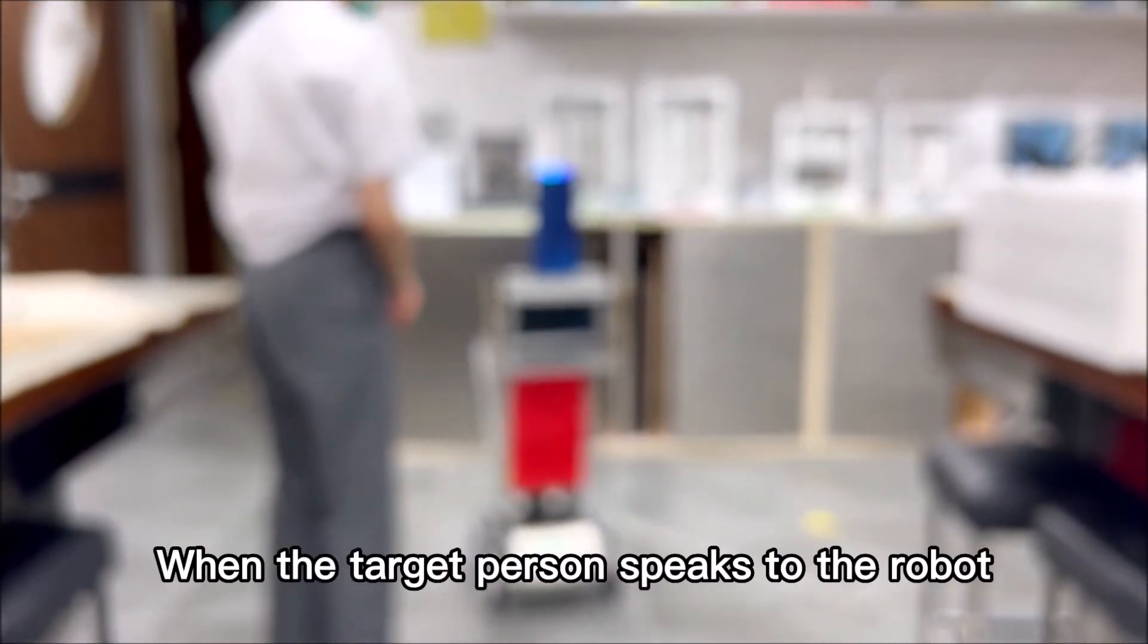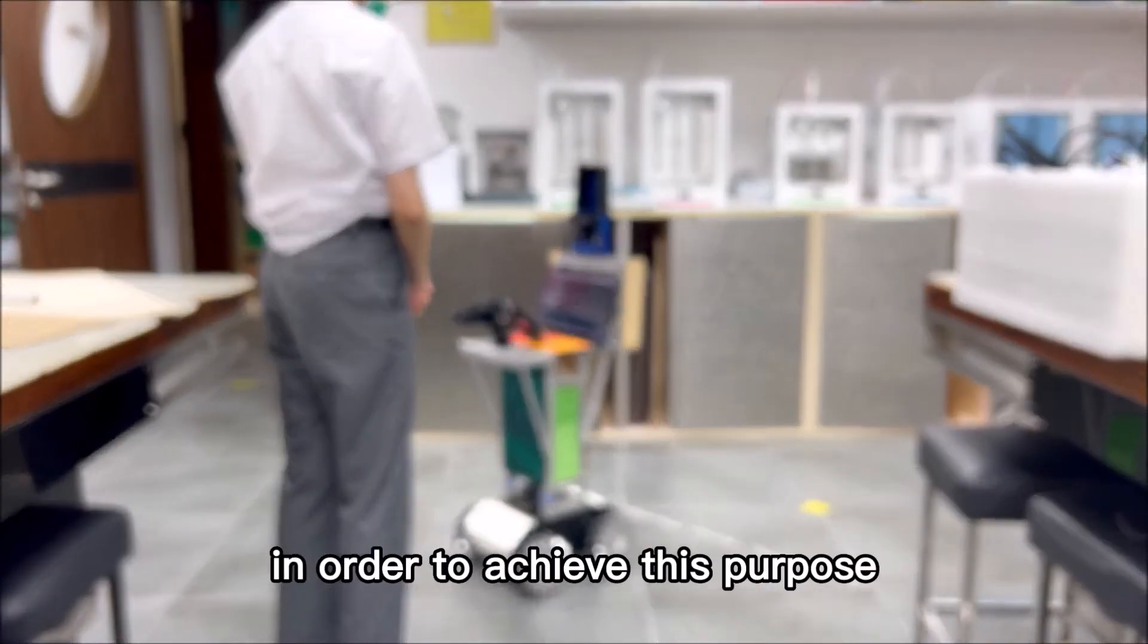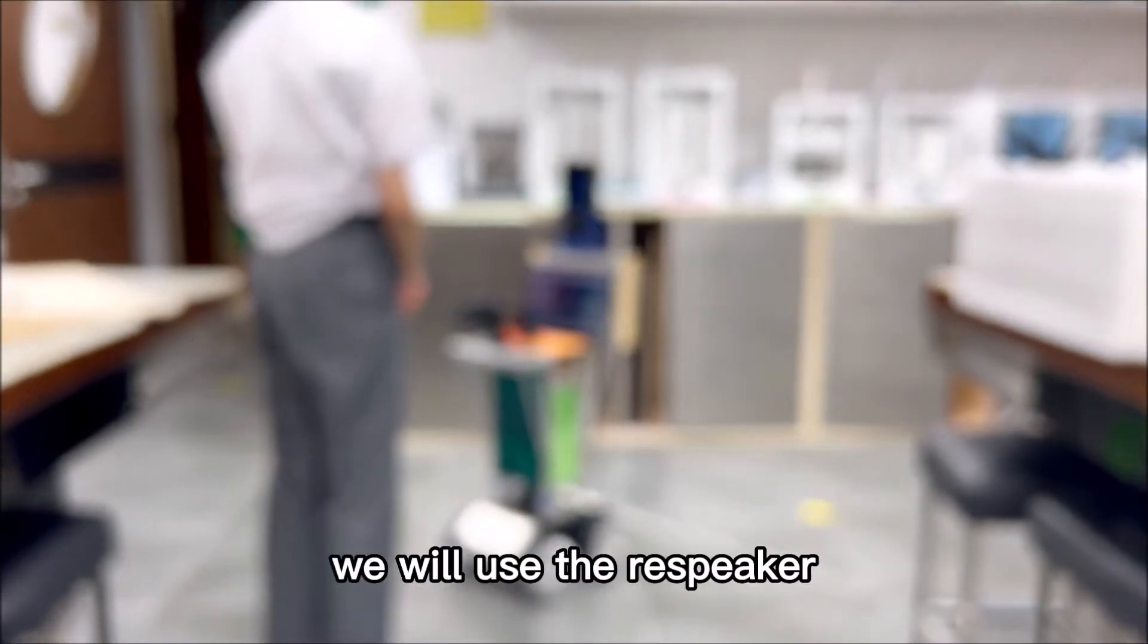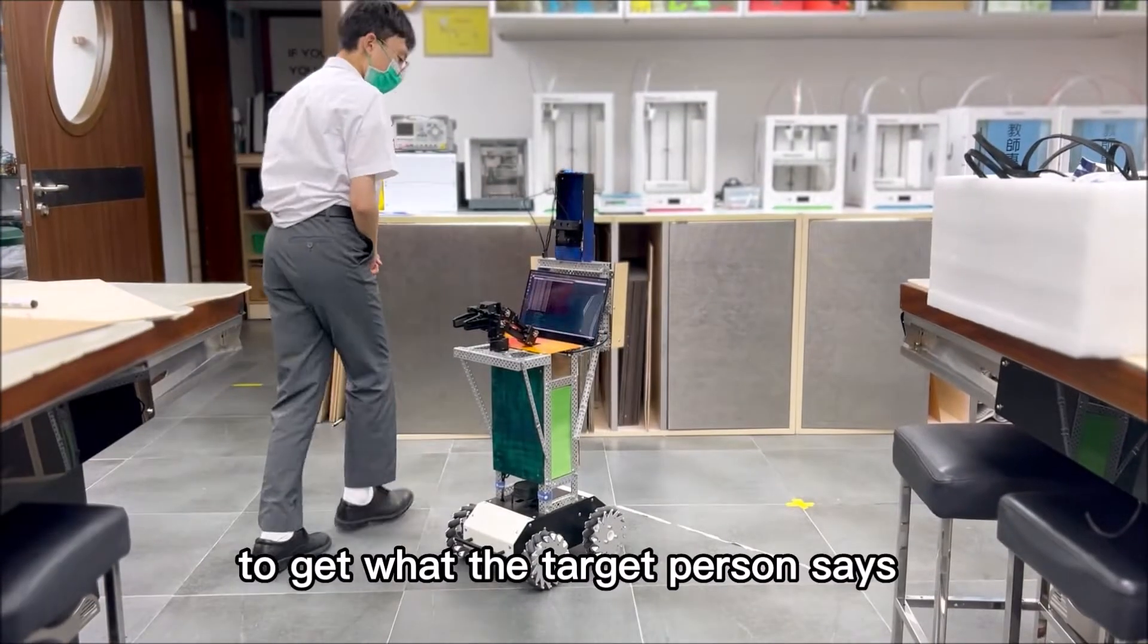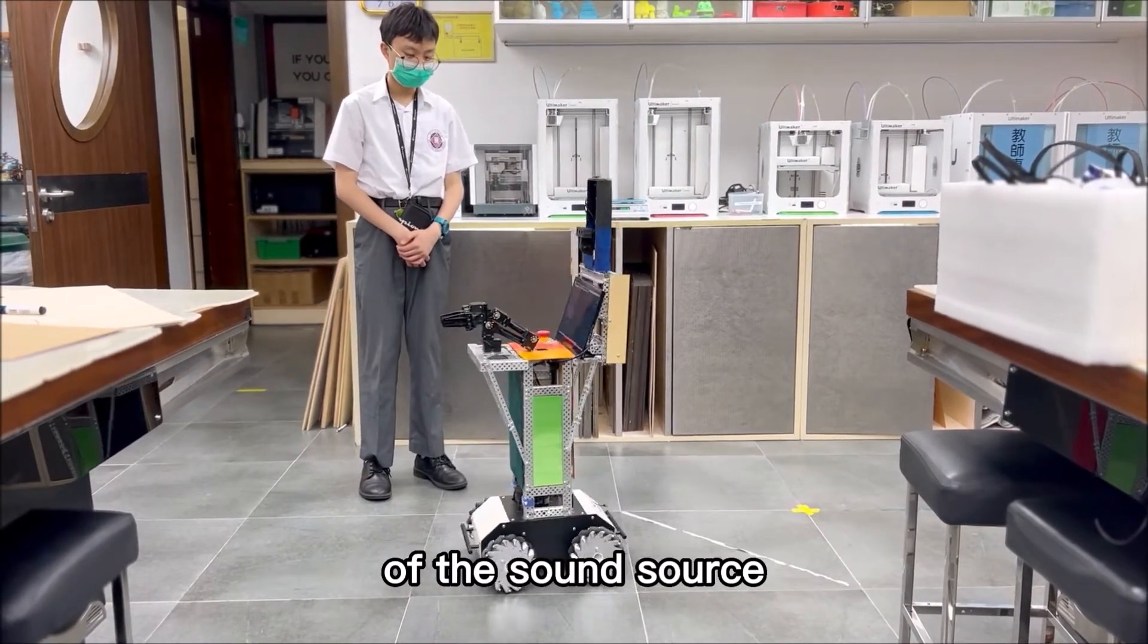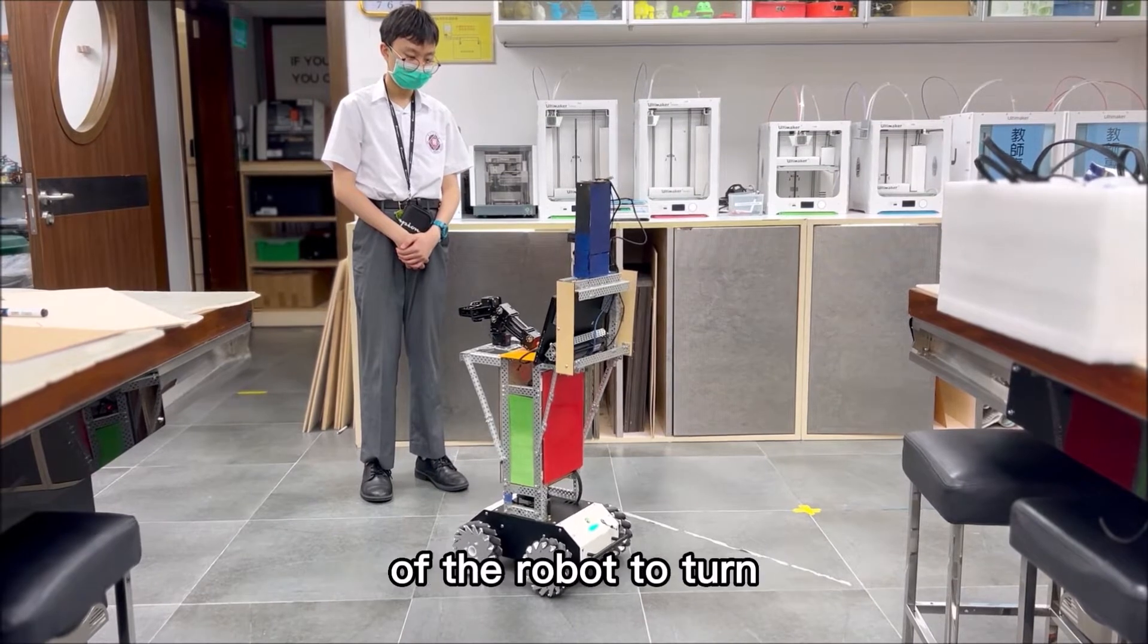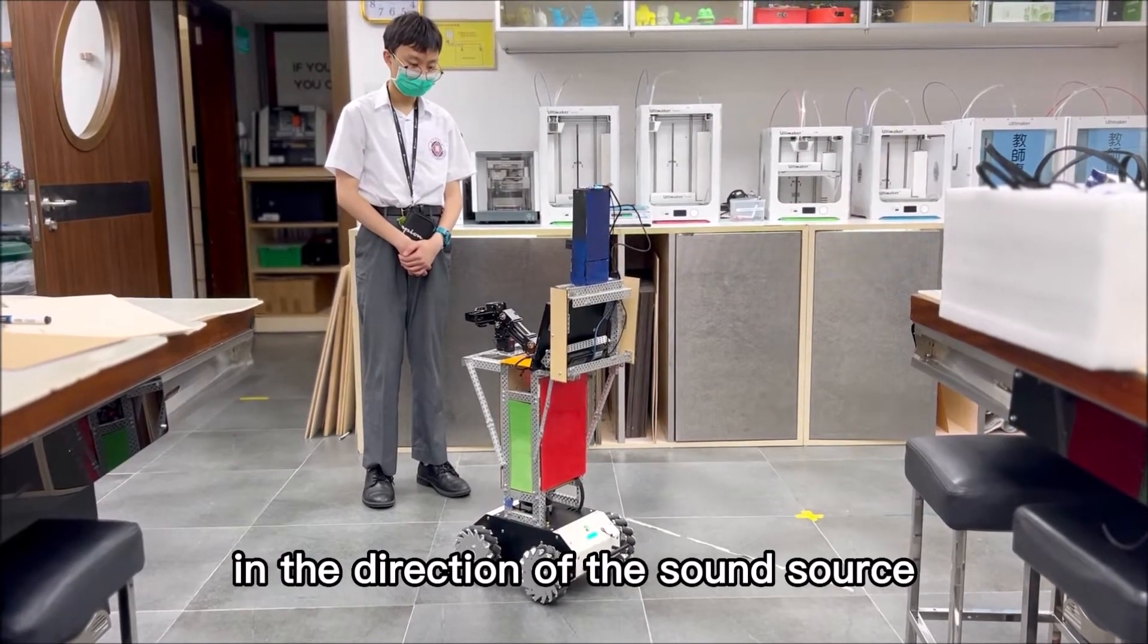When the target person speaks to the robot, the robot will turn to the direction of the target. To achieve this purpose, we use the ReSpeaker to get what the target person says and let the robot find the direction of the sound source. After finding the direction, we control the chassis to turn toward the sound source.